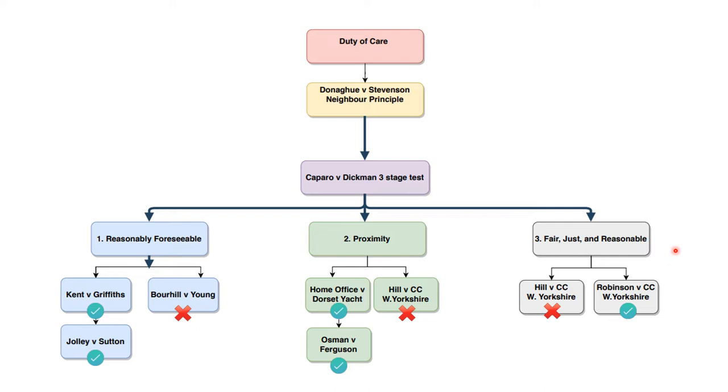For proximity, we need to show that there was a proximate relationship between the defendant and the claimant. That can be a relationship that is physically close in terms of time and space, and you could use Home Office v Dorset Yacht to make that point. Or there could be proximity through a legal relationship, such as that shown in the case of Osman v Ferguson. But it's nice to contrast with a case where there was not proximity. So Hill v Chief Constable of West Yorkshire is a case on that, where there wasn't sufficient proximity between the police and the claimant. The claimant was the mother of the last victim of the Yorkshire Ripper, and there wasn't sufficient proximity there because there was no way that the police could have known who the last victim would be.